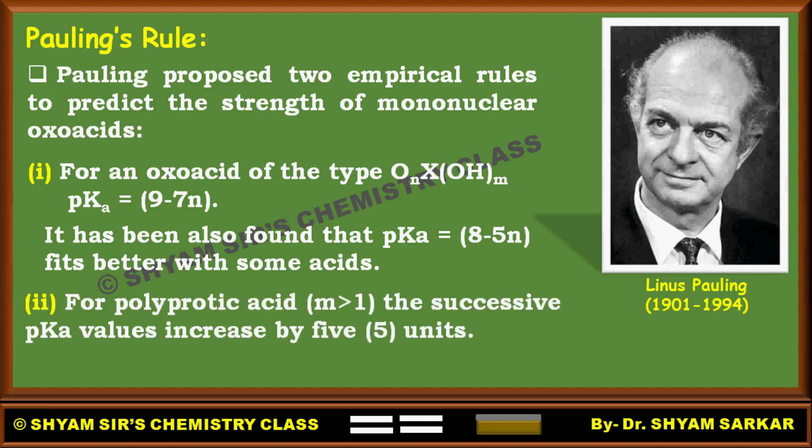What is the second rule? The second rule says that for a polyprotic acid, where M is greater than 1, the successive pKa values increase by 5 units. So if pKa1 is x, then pKa2 will be x plus 5, and so on — 5 is successively added for polyprotic acids.